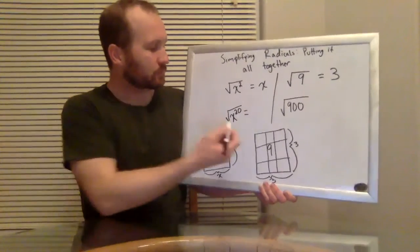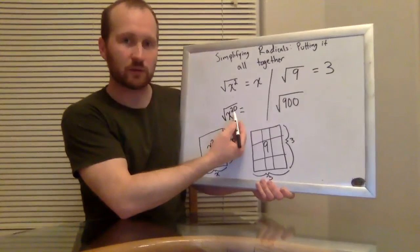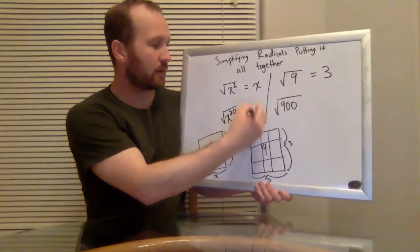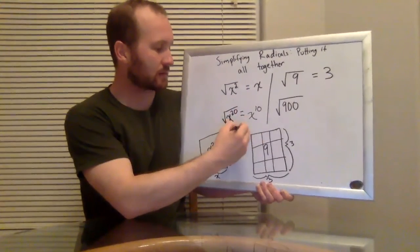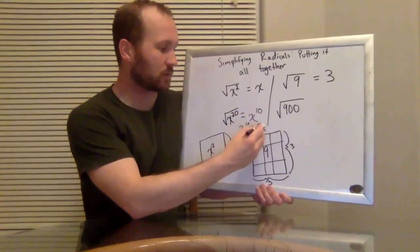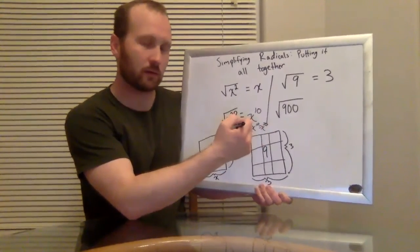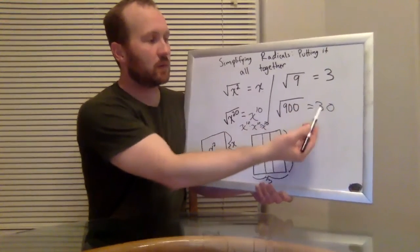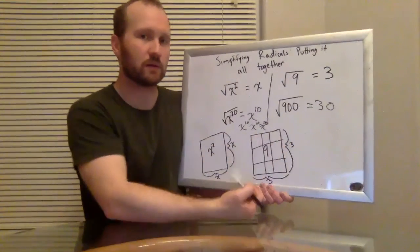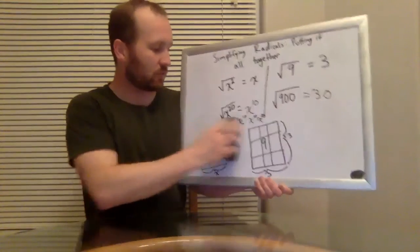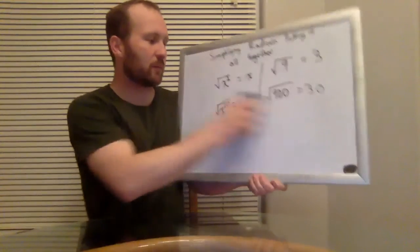So based on that, the square root of x to the 20th is x to the 10th, because x to the 10th times x to the 10th equals x to the 20th. Similarly, the square root of 900 is 30, because 30 times 30 equals 900. So that's kind of our definition of what a square root is, another way of representing it.